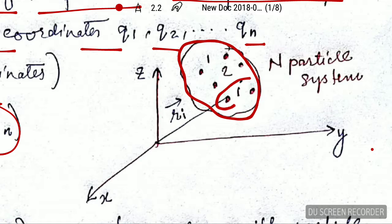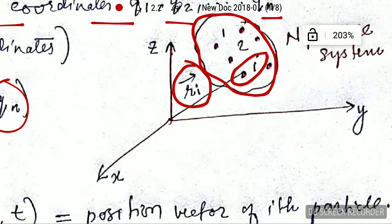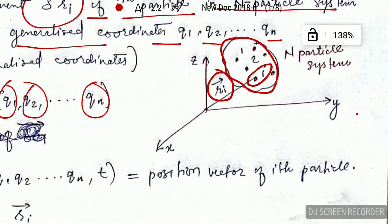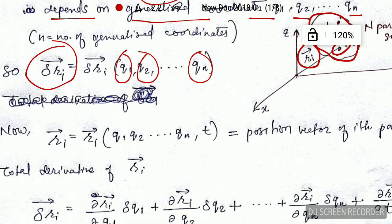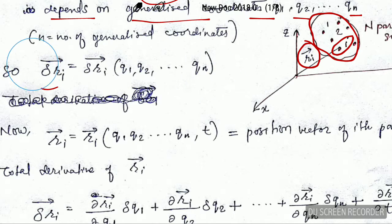This is assumed to be the ith particle, and this is the position vector of the ith particle. There are n particles in this system, and as I have already explained, the virtual displacement depends on the generalized coordinates from q1 up to q_n.